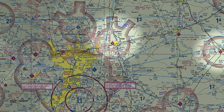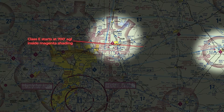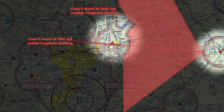You'll notice several different colors, some shading, and dashed lines — these all represent different types of Class Echo airspace in various locations. You might see areas that are magenta in color and have one side shaded. That shaded side indicates where the Class Echo starts at 700 feet above ground level. Generally speaking, outside that area the Class Echo starts roughly at 1,200 feet AGL. You may hear this called domestic enroute airspace, meaning Class Echo exists at 1,200 feet AGL unless otherwise designated by the sectional. These differences in shading tell you where Class Echo begins, but there's more to this.